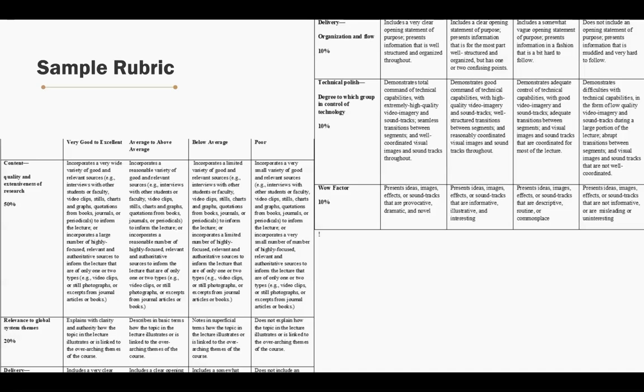Here's a sample rubric that aligns with those grading elements. Content is 50 percent, relevance to class themes is 20 percent, delivery — organization and flow — is 10 percent, and technical polish is 10 percent. This one also includes a 'wow factor,' which you don't necessarily have to use, but sometimes when you see a compelling and engaging video you can't pinpoint exactly what made it so impressive. That professor added it in, but you can adjust, remove, or reweight percentages as needed.